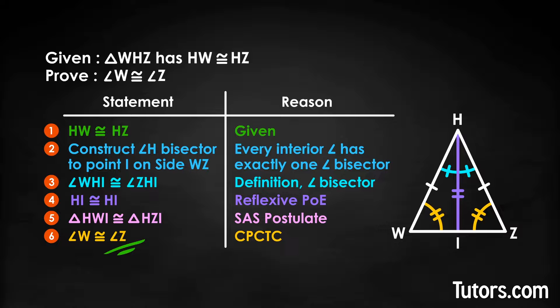This was a five-step proof. Most geometry proofs can be done in fewer than 10 steps. If you find yourself going past, say, seven or eight steps, you may be going down an inefficient or wrong path.